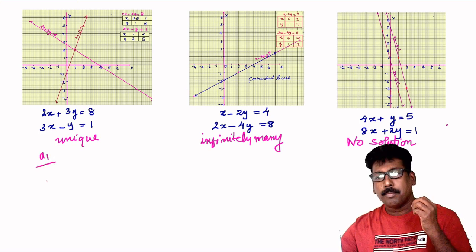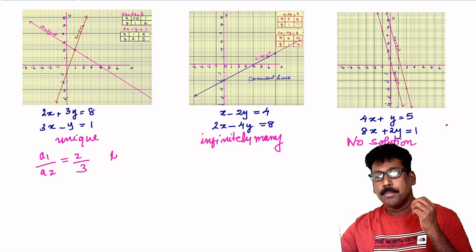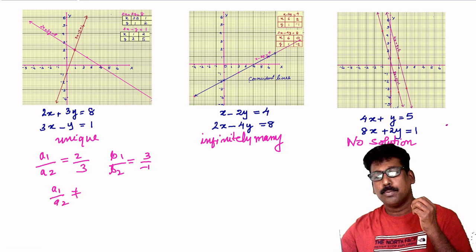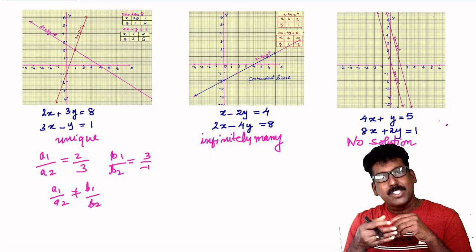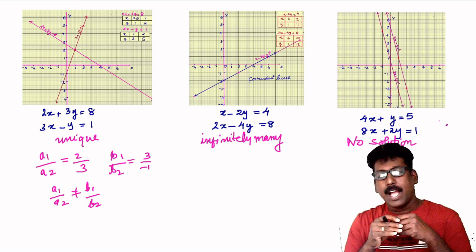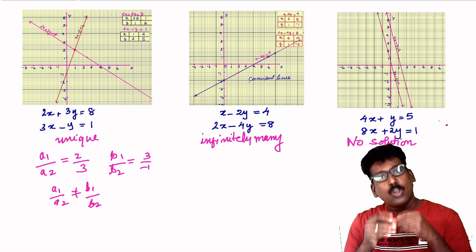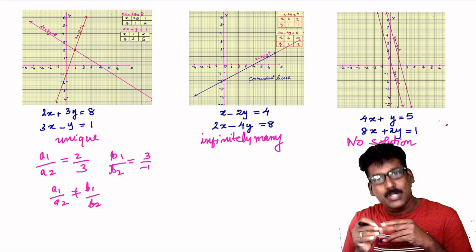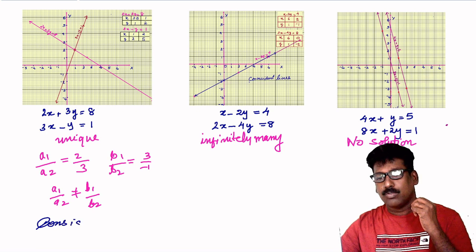For the first case, a1 by a2 equals 2 by 3, and b1 by b2 equals 3 by negative 1, which is negative 3. Here a1 by a2 is not equal to b1 by b2. That means for intersecting lines the equations will have a unique solution. If a pair of linear equations has a unique solution, we call this a consistent pair of linear equations.